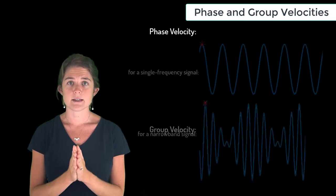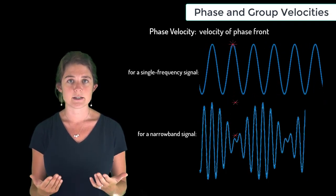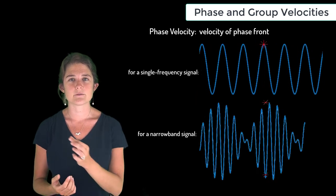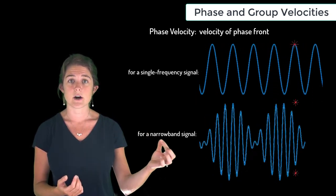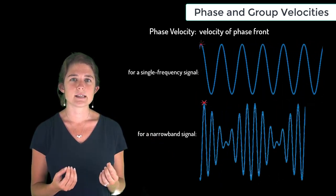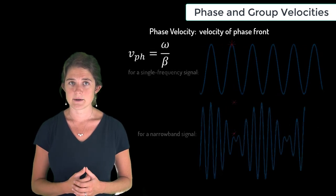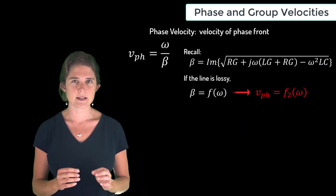Phase velocity is the velocity of the phase front of the wave. In other words, it's the velocity of a single peak or trough. Phase velocity is given by omega divided by beta. Notice that if the line is lossy, phase velocity depends on frequency.